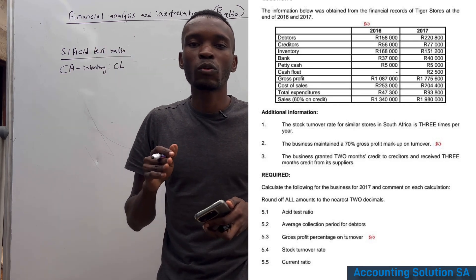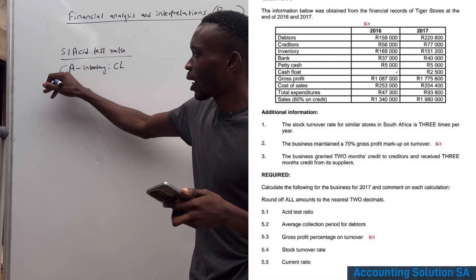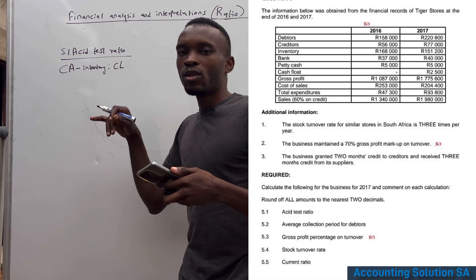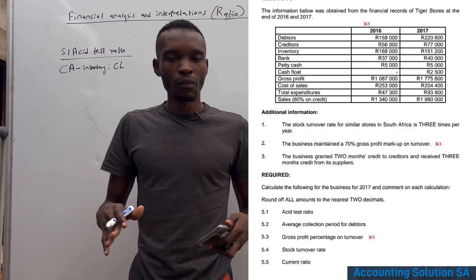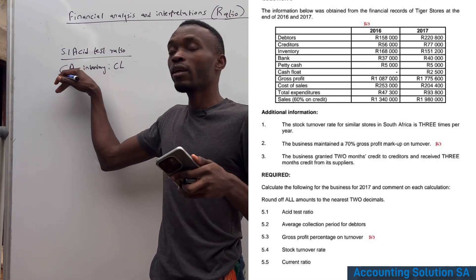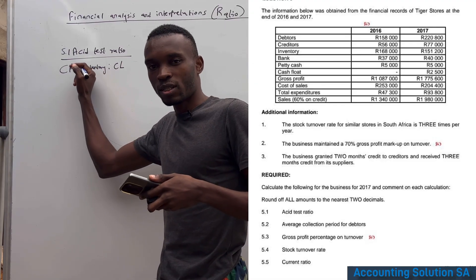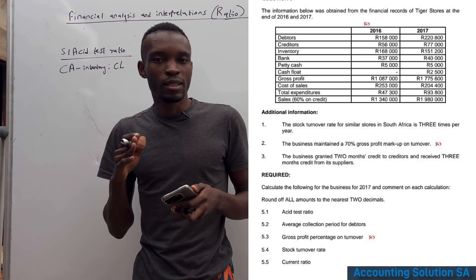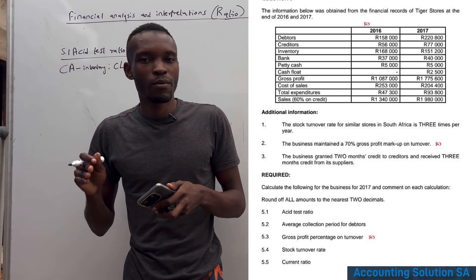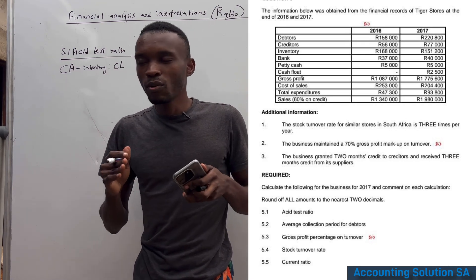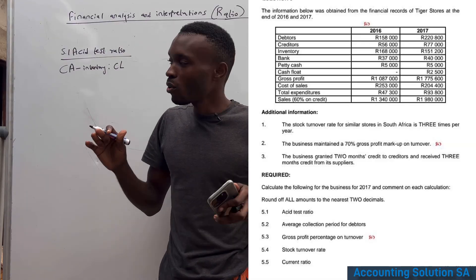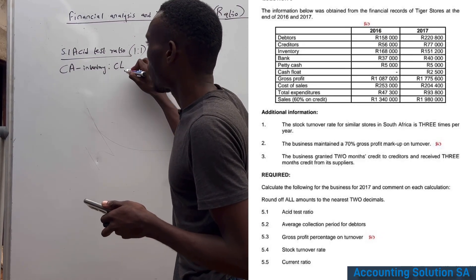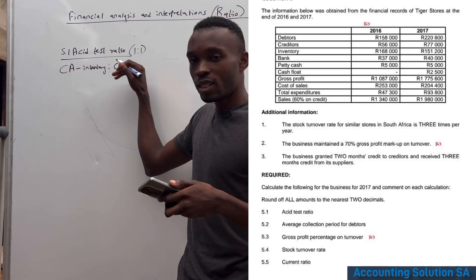The acid test ratio shows whether the company can pay its short-term liabilities using current assets excluding inventory. Inventory is excluded because it may not be easily converted — for example, bread can expire. The minimum acceptable ratio is 1:1, meaning assets must at least equal liabilities.